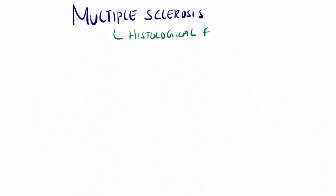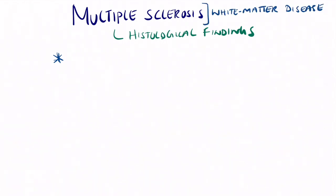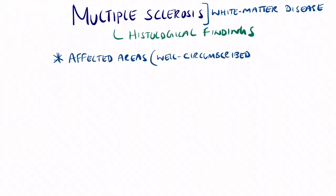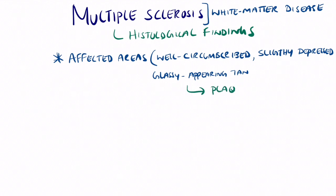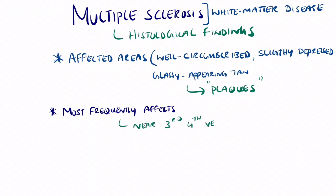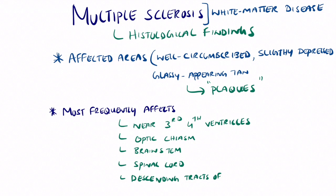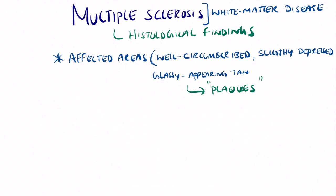Now let's look at the histological findings of multiple sclerosis. On a histological slide of the brain, it is a white matter disease and the affected areas are usually well-circumscribed with a slightly depressed, glassy appearance. These are collectively known as plaques, and you would hear about plaques whenever you read about multiple sclerosis. They most frequently affect the third and fourth ventricles, near the optic chiasm, the brainstem, the spinal cord, and the descending tracts.